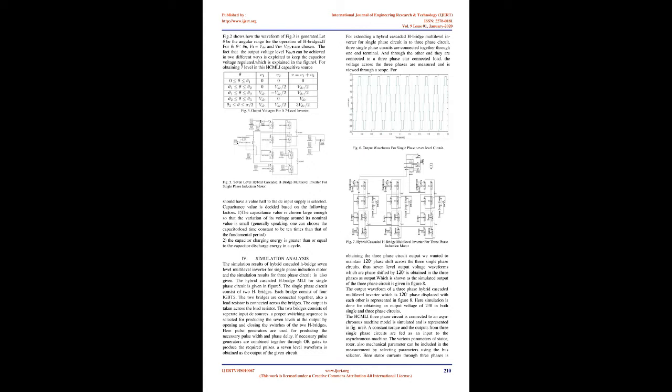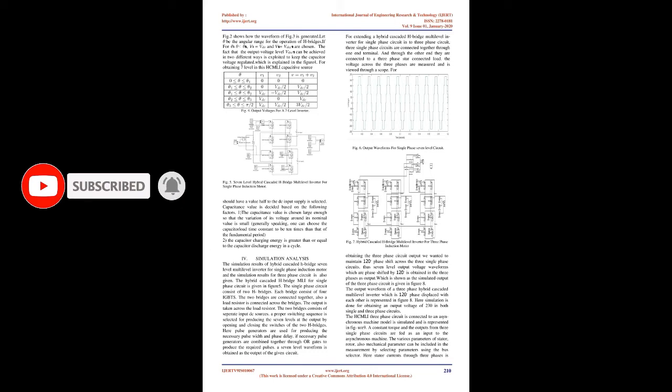Working Principle of 7-Level HMLE: A seven-level hybrid cascaded H-bridge multilevel converter has two H-bridges for each phase. One H-bridge is connected to a DC source and another H-bridge is connected to a capacitor as shown in Fig. 1. The DC source for the first H-bridge, H1, could be a battery or fuel cell with an output voltage of VDC, and the DC source for the second H-bridge, H2, is the capacitor voltage held at VC. The output voltage of H1 is denoted V1 and that of H2 is V2, so the total output voltage VT = V1 + V2.